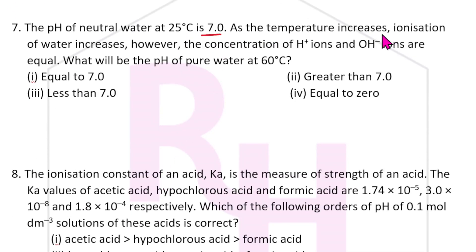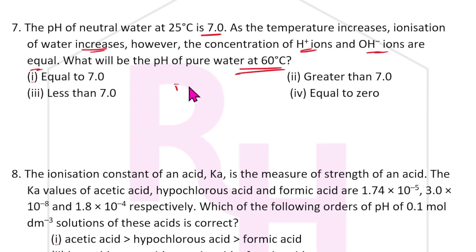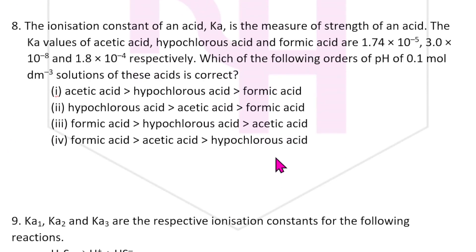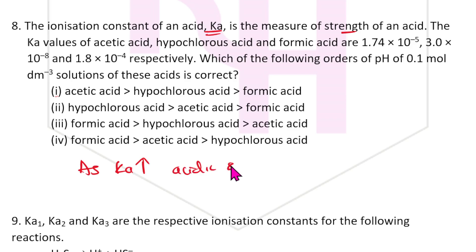Seventh question: pH of neutral water at 25°C is 7. As temperature increases, ionization of water increases; however, the concentrations of H⁺ and OH⁻ ions remain equal. At 60°C, ionization increases, so H⁺ concentration increases and pH will be less than 7. The answer is less than 7.